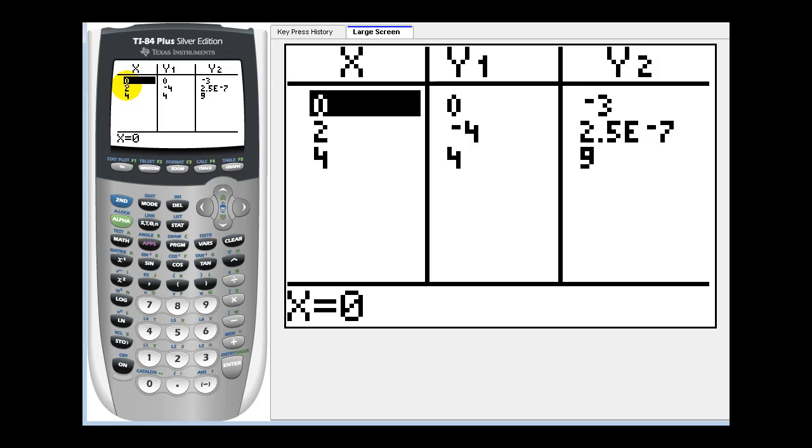So notice this verifies our work. The derivative at x equals 0 is equal to -3. At 2, it's equal to—remember, this is very close to 0—2.5 times 10⁻⁷. And then at 4, the derivative function was equal to 9.